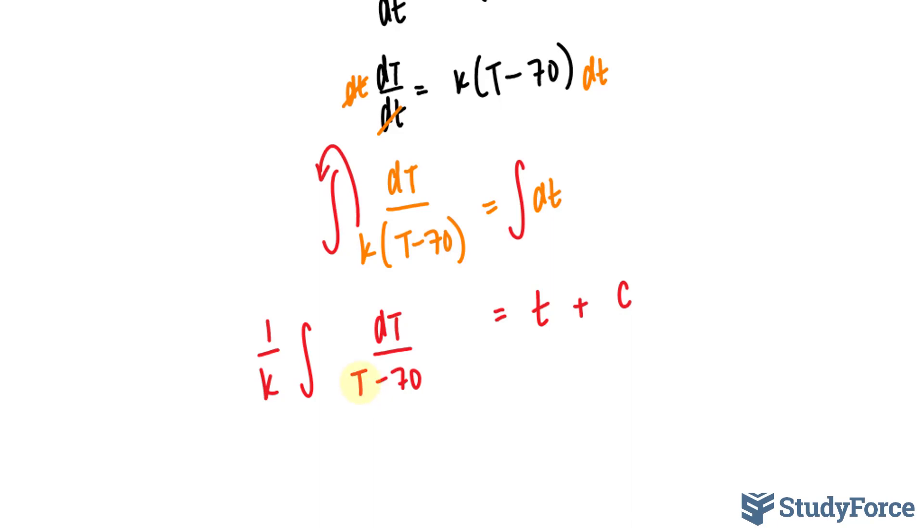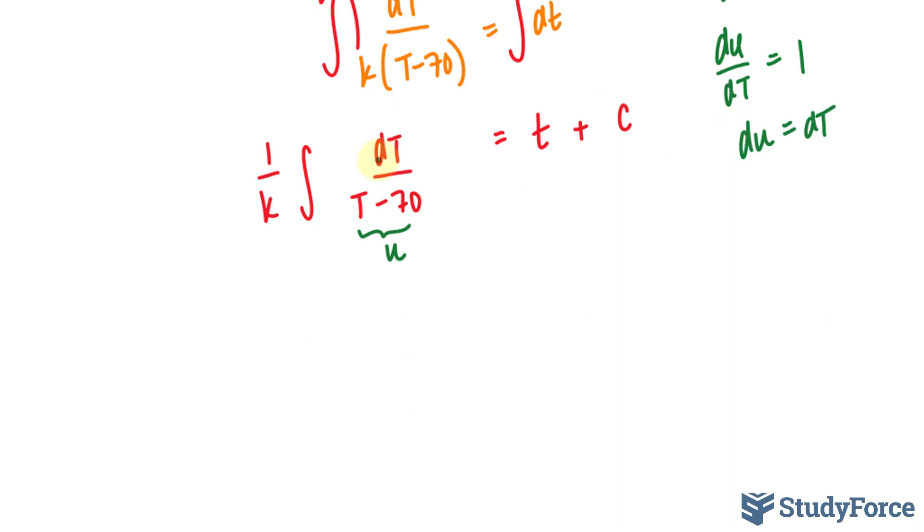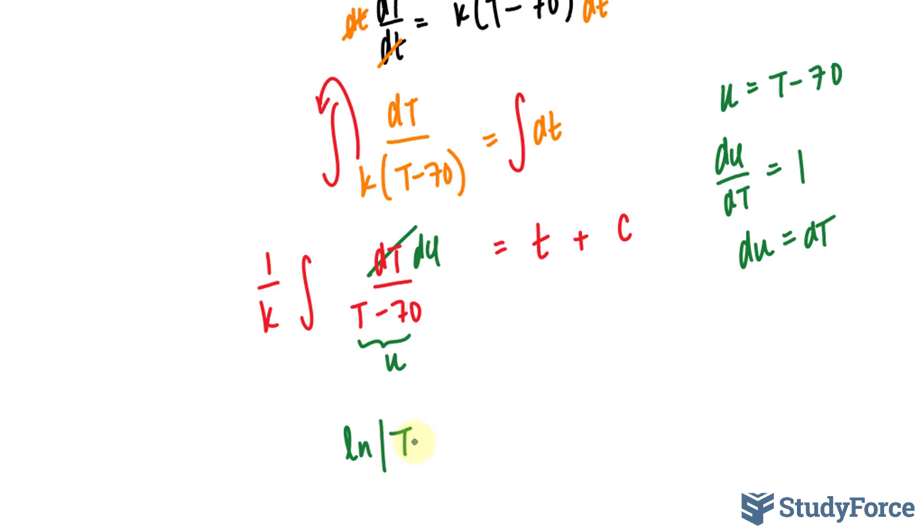Now if I can somehow change T minus 70 into a simple letter, I can integrate this quite easily. In fact, if I set this equal to u, u is equal to T minus 70, I now have the expression, the integral of dT over u. But we still need to change this dT with respect to u. And I can do that by taking the derivative of this. du/dT is equal to the derivative of T is 1, and the derivative of negative 70 is 0. Solving for dT, I end up with du is equal to dT. That means I'll replace this dT with du. And taking the integral of 1 over u is simply ln absolute of what I set u as, which is T minus 70.